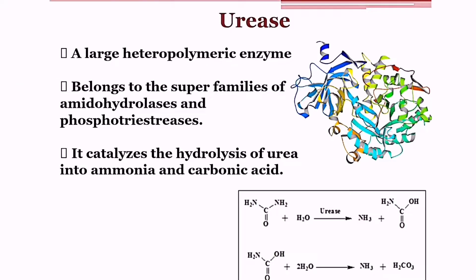So what is urease? Urease is a heteropolymeric enzyme and it catalyzes the hydrolysis of urea into ammonia and carbonic acid. You can see here the chemical reaction as well and the structure of urease.